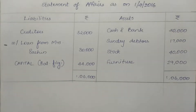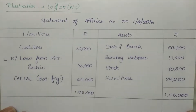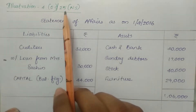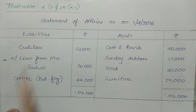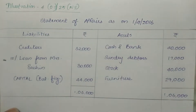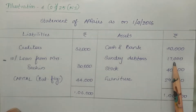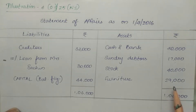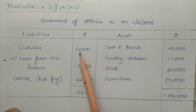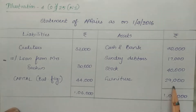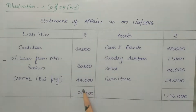We start with the opening date Statement of Affairs. Cash and bank is 20,000; sundry debtors 17,000; stock 40,000; furniture 29,000. On the liabilities side, creditors are 32,000 and loan is 30,000. The opening capital works out to 44,000 as the balancing figure.